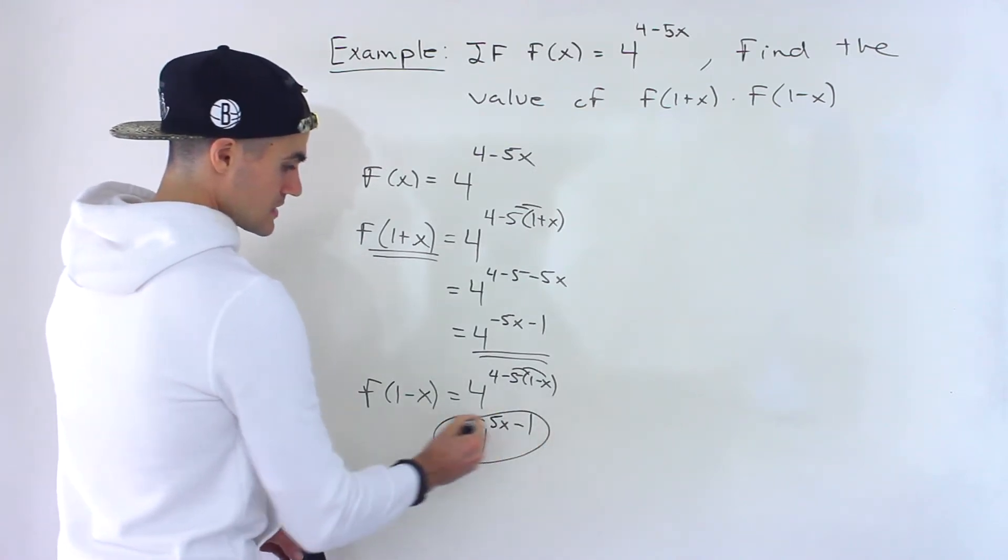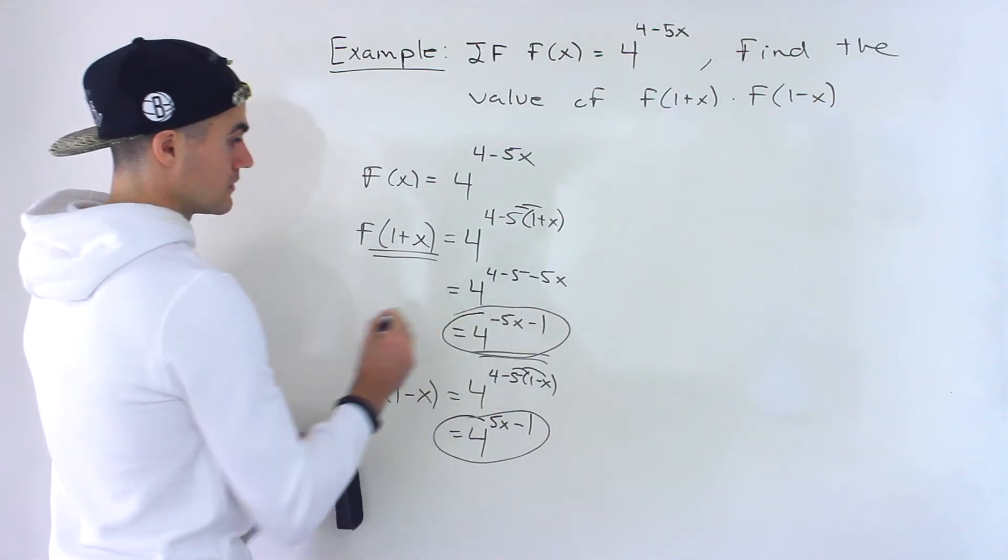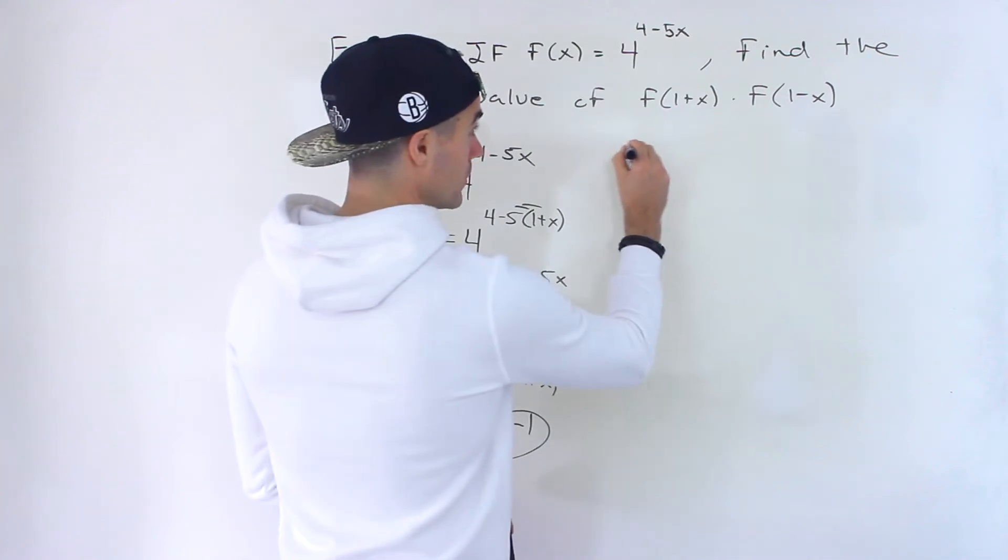Right, so this is f of 1 minus x, and then this over here is f of 1 plus x. Now what's going to happen when we multiply them?